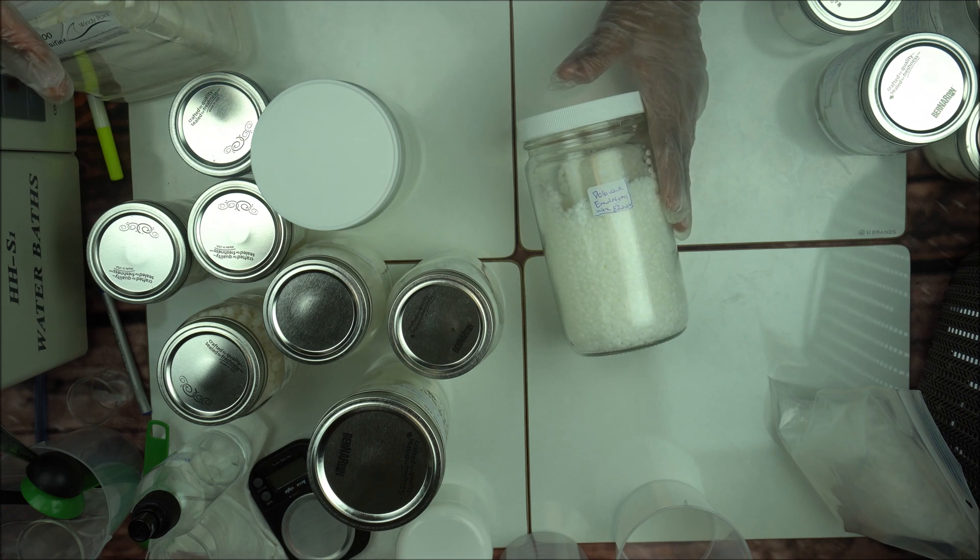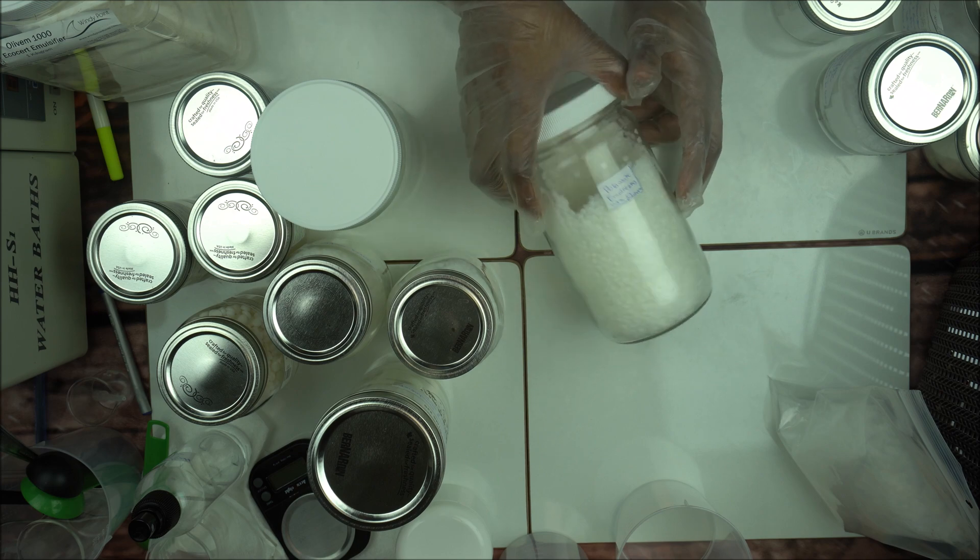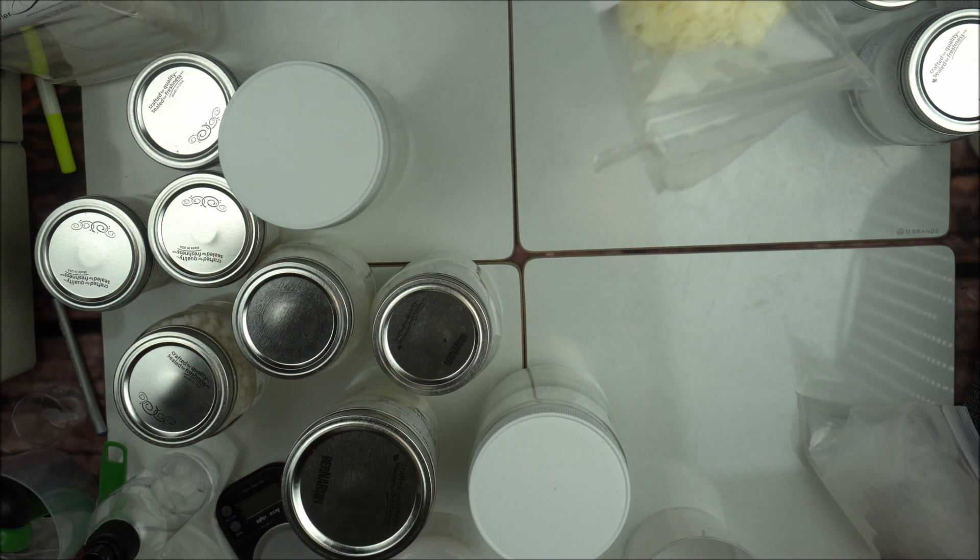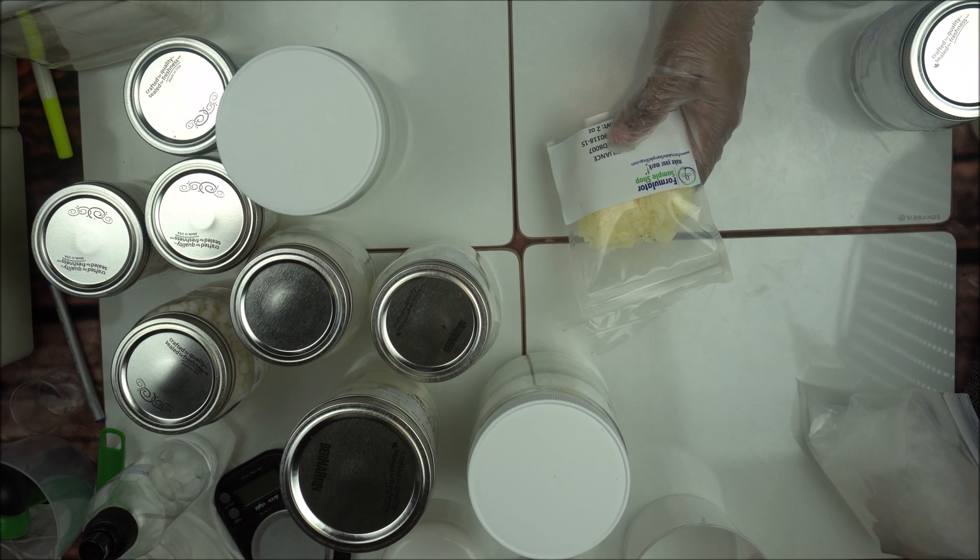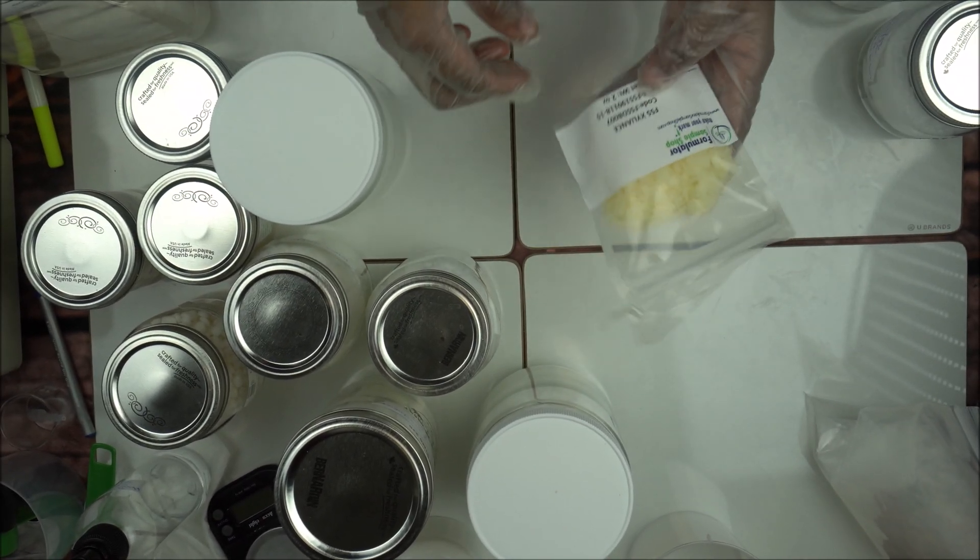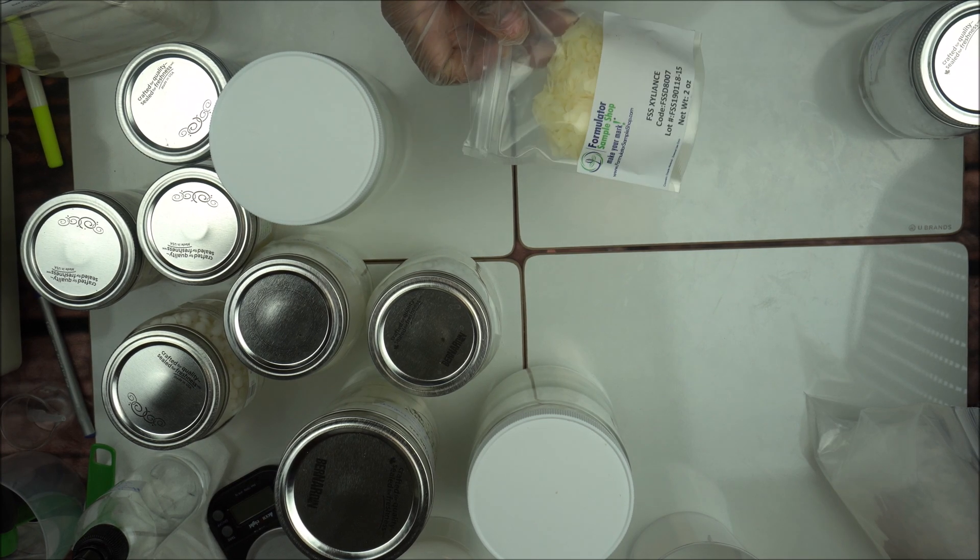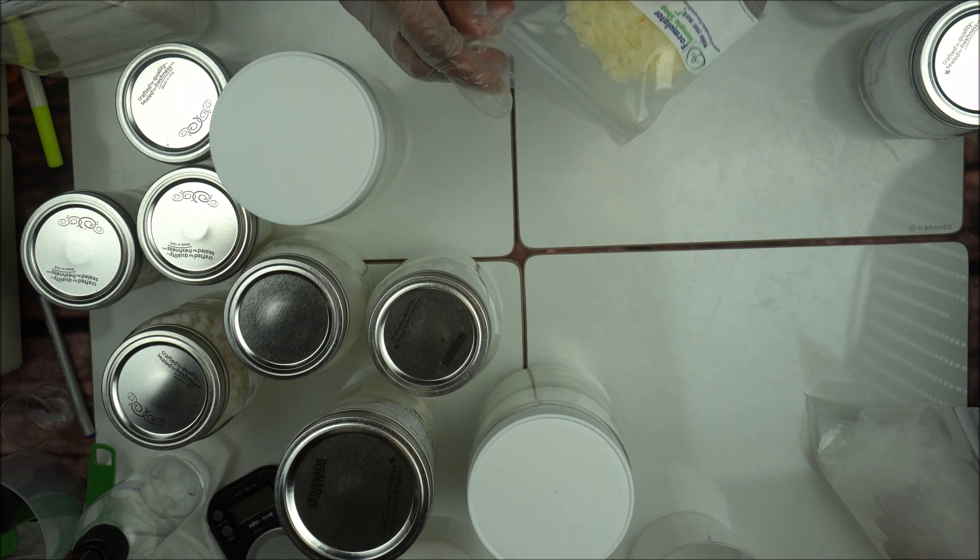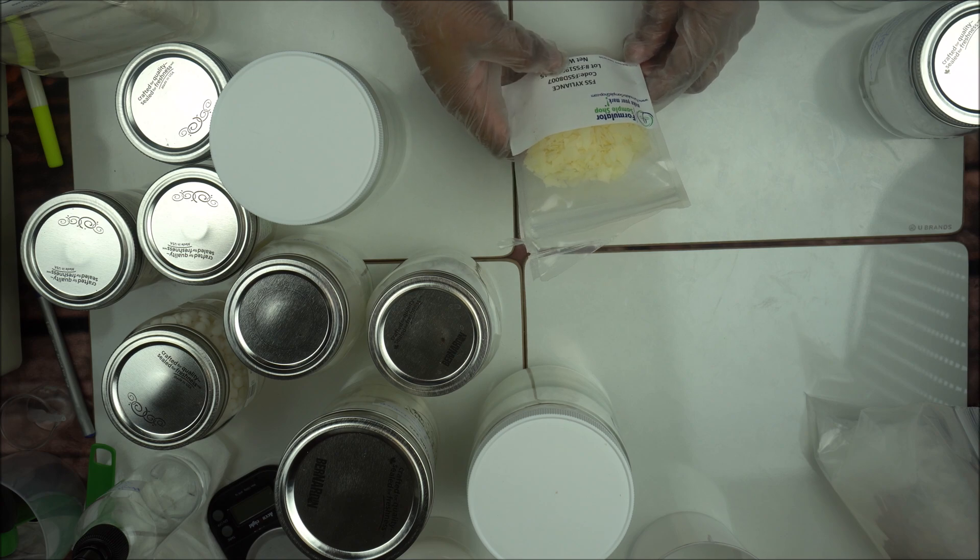Another very good emulsifier is called Zealan. Zealan is not a common emulsifier. It's something like a product formula from Sample Shop website. It's a non-ionic surfactant and it's good for making a variety of skincare products, and it can be used as a co-emulsifier.